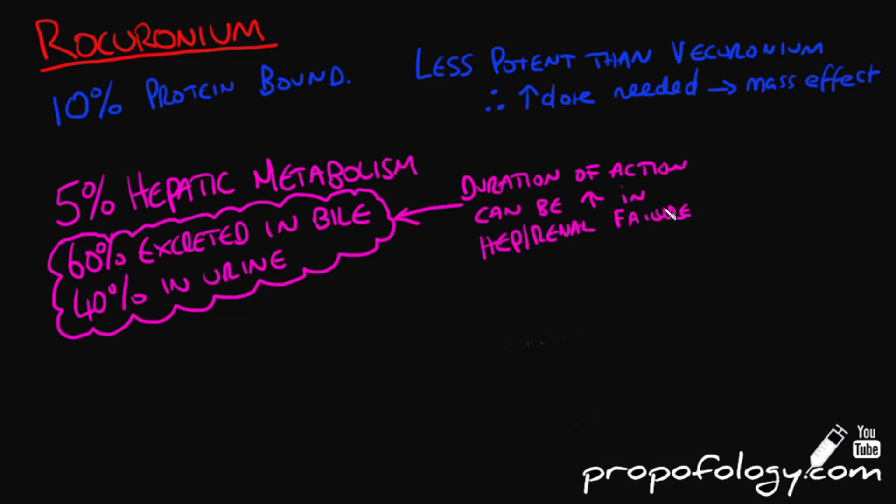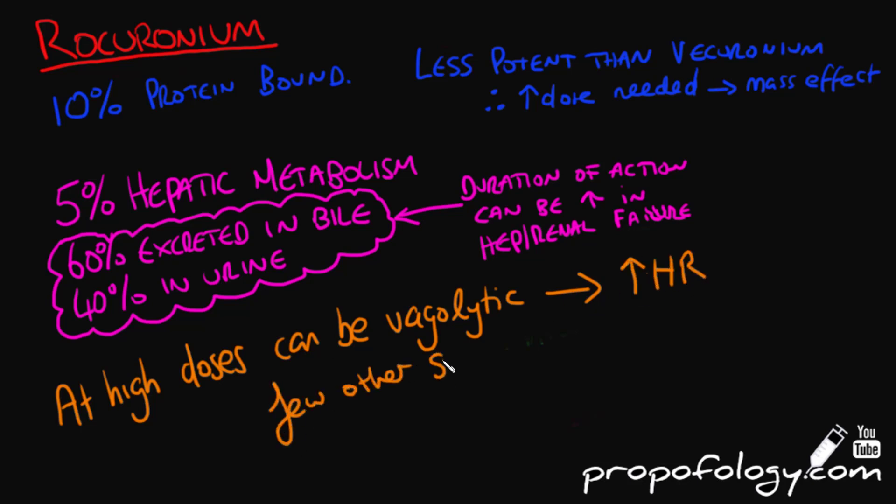In terms of systemic effects, it really doesn't have very many, but at high doses it can exert a vagolytic effect on the heart which causes a tachycardia. You should be aware that neuromuscular blockers are a leading cause of anaphylaxis perioperatively and of course surrounding any intubation.